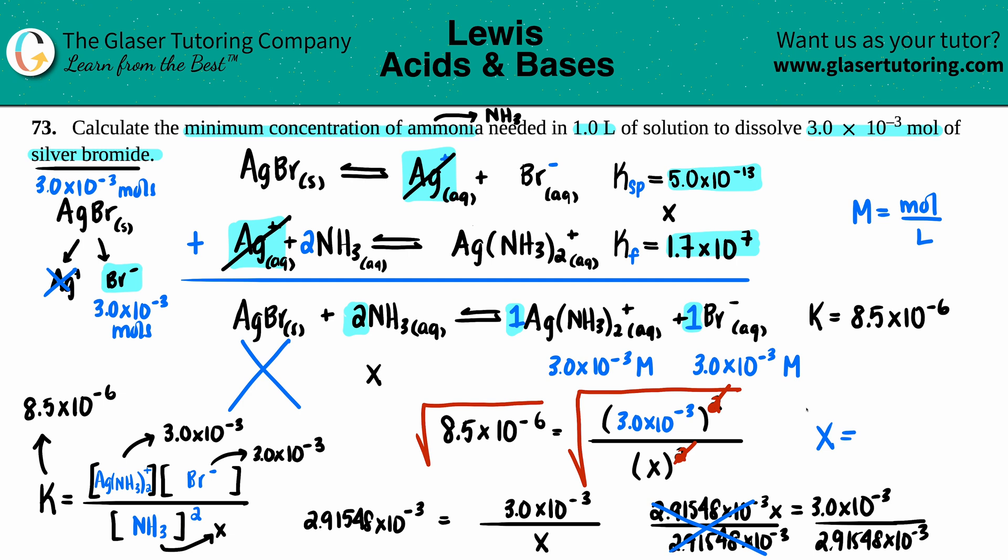3 times 10 to the negative third divided by 2.91548 times 10 to the negative third. Oops, let me try that again. I was like, what kind of molarity is that? There we go. Two sig figs, so I would say 1.2 molarity. And we want that concentration of ammonia. Keep in mind we said that ammonia in this case was just x. So if the concentration of the NH3, which we just said was x, well that's what it is: 1.0 molarity. And that's the end of the problem.